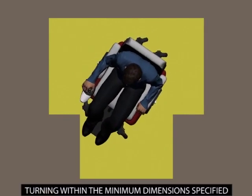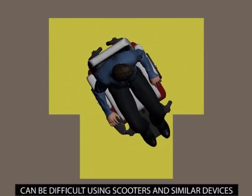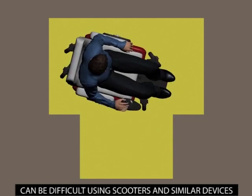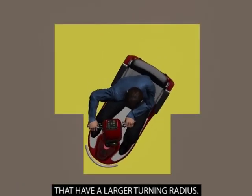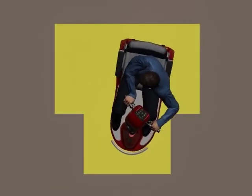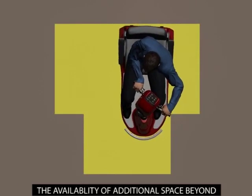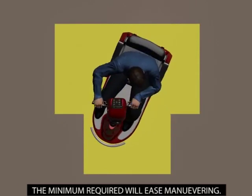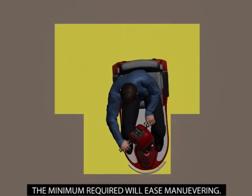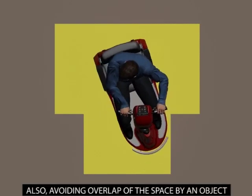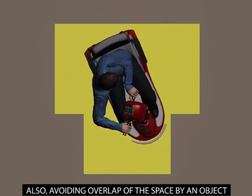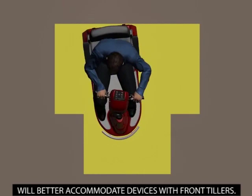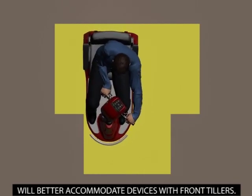Turning within the minimum dimensions specified can be difficult using scooters and similar devices that have a larger turning radius. The availability of additional space beyond the minimum required will ease maneuvering. Also, avoiding overlap of the space by an object will better accommodate devices with front tillers.